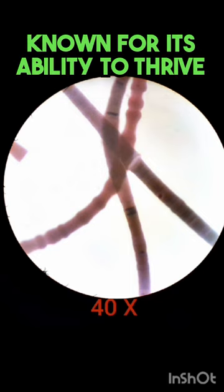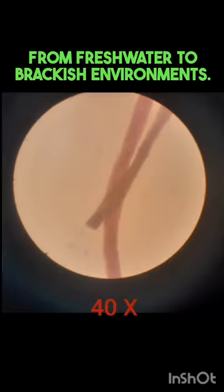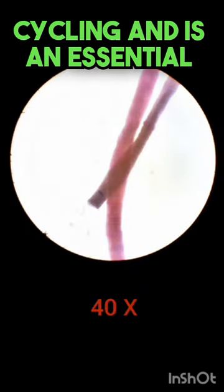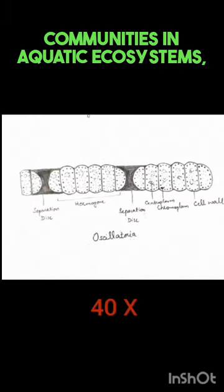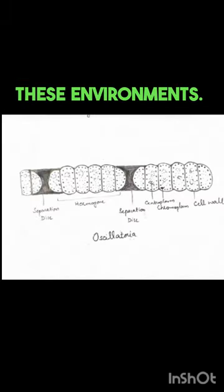Oscillatoria is known for its ability to thrive in a wide range of habitats, from freshwater to brackish environments. It plays a role in nutrient cycling and is an essential component of microbial communities in aquatic ecosystems, contributing to the overall ecological balance of these environments.